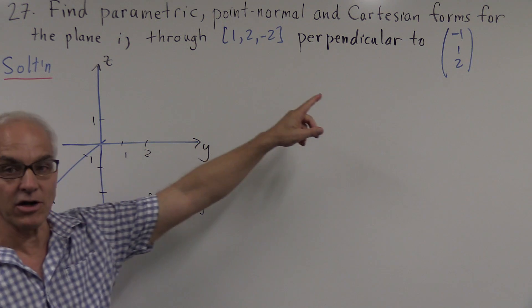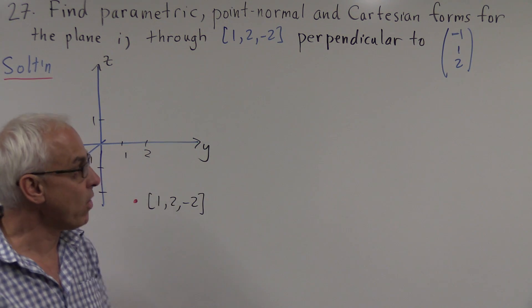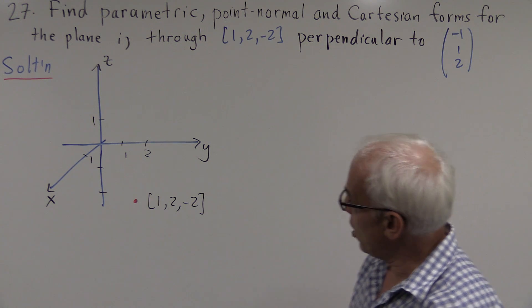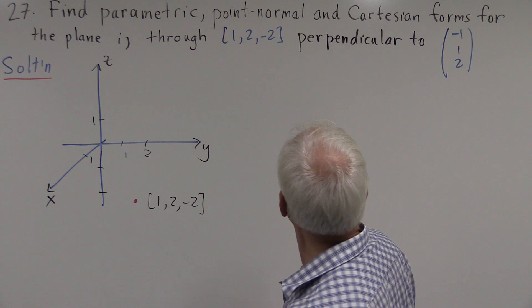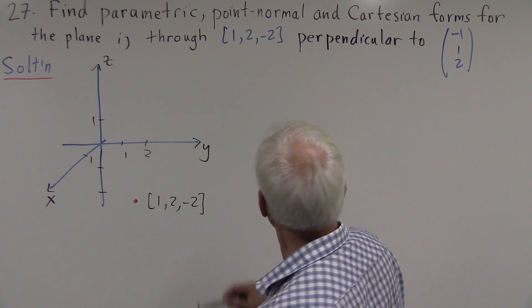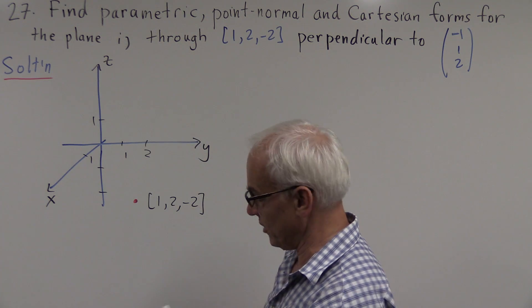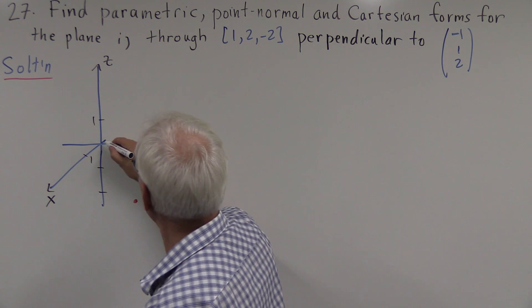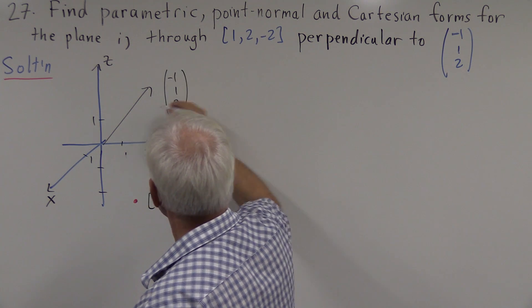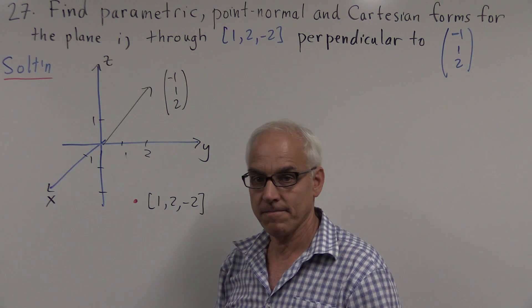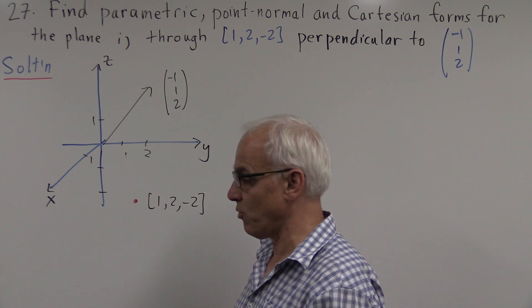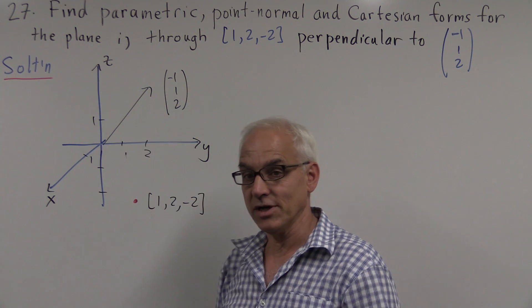And now we want it to be perpendicular to the vector (-1,1,2). Where is that? Well, minus 1 would be that direction there on the x-axis, and then 1 in the y direction, and then up 2 in the z direction. So the vector (-1,1,2) is something like that. So what we're doing is we're looking for a plane that passes through this point, which is perpendicular to this vector.